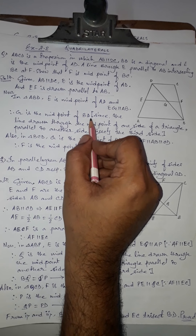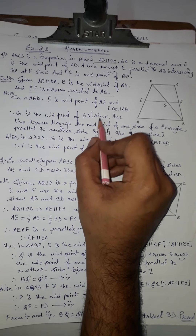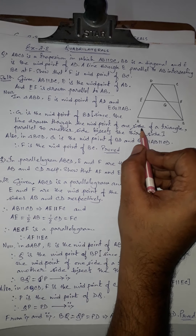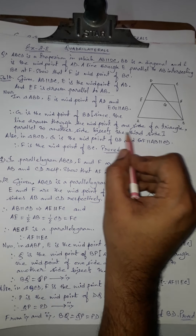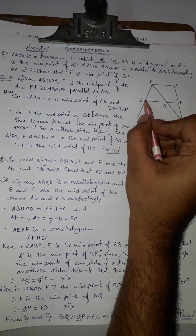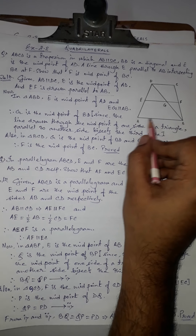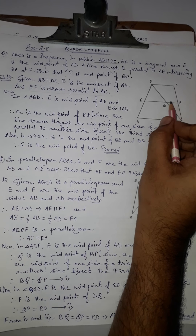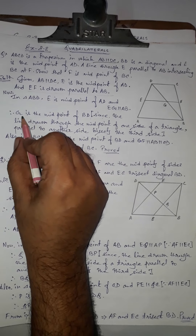Therefore G is the midpoint of BD. The reason is the converse of the midpoint theorem: a line drawn through the midpoint of one side of a triangle, parallel to another side, bisects the third side. So E is the midpoint, EG is parallel to AB, hence G is the midpoint of BD.